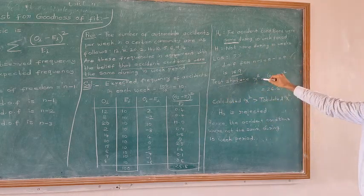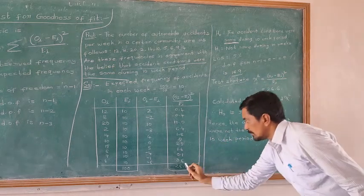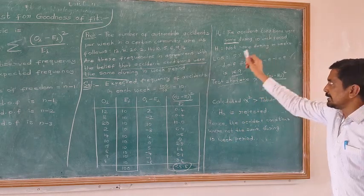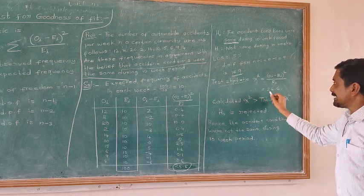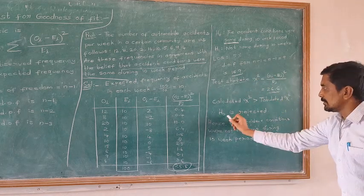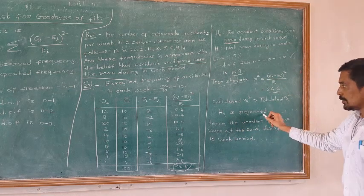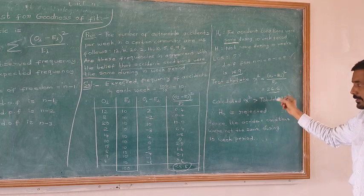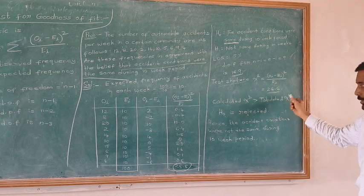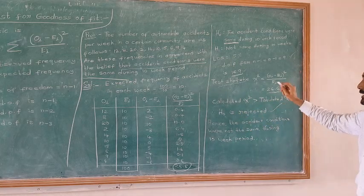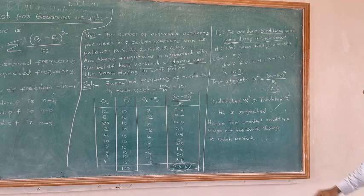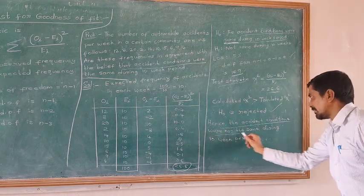The calculated chi-square value is 6.6 and the table value is 16.9. Since the calculated value is less than the table value, H0 should be accepted. However, in this case the calculated value exceeds the table value, so H0 is rejected. That means the accident conditions were not the same during the 10-week period.